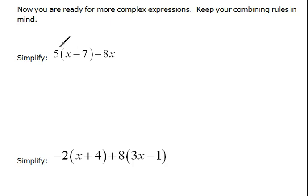So our first problem says we have 5 times x minus 7 minus 8x. Well first things first. Do you see here that we are multiplying to more than one term inside this parentheses?